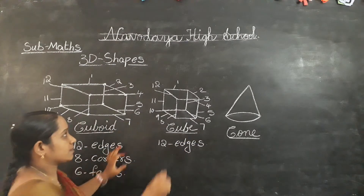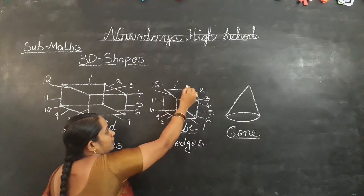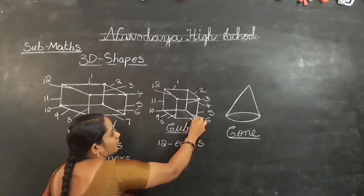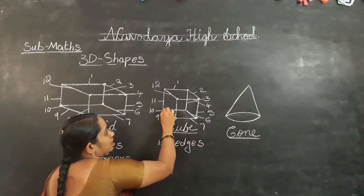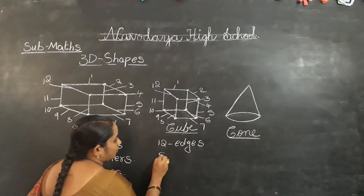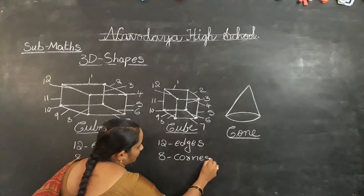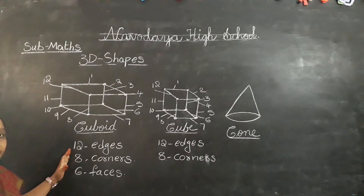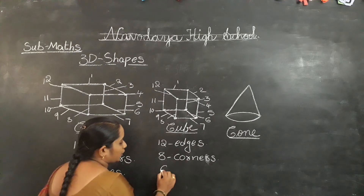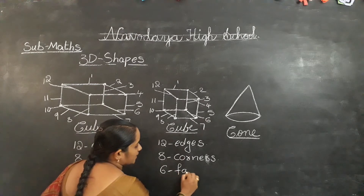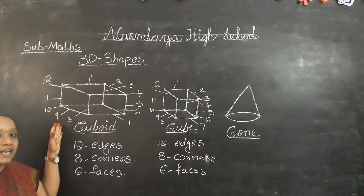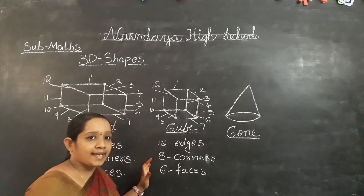Now count the corners of a cube: 1, 2, 3, 4, 5, 6, 7, 8. How many corners? 8 corners — same as a cuboid. A cube also has 6 faces. But the difference between the two is: cuboid faces are like rectangles, and cube faces are like squares.